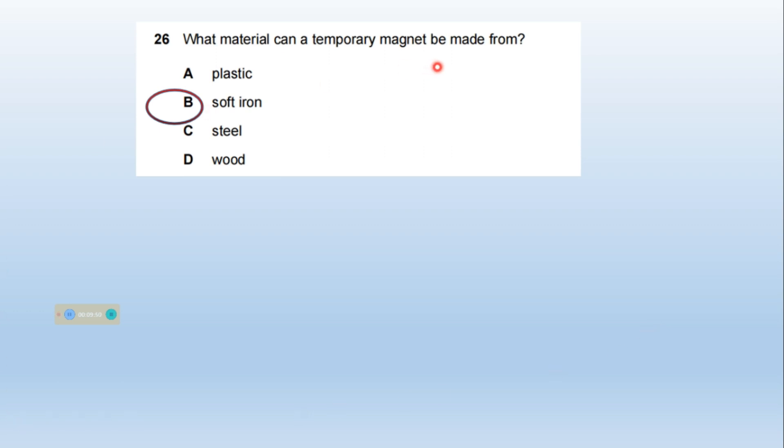What material can temporary magnets be made from? B, soft iron.